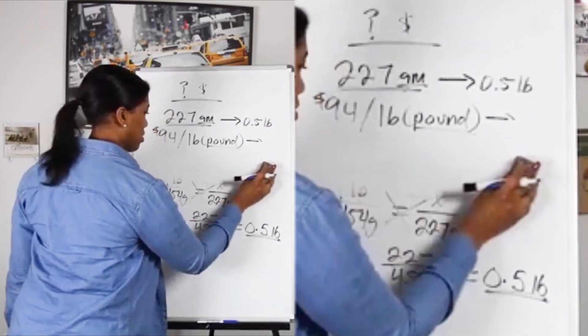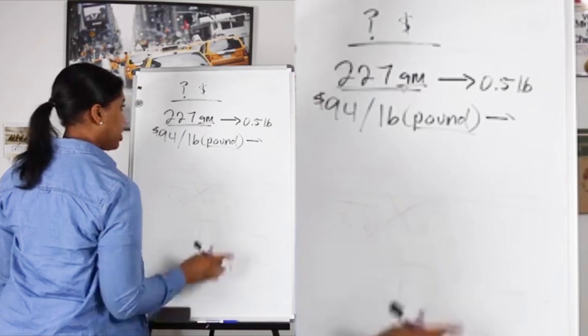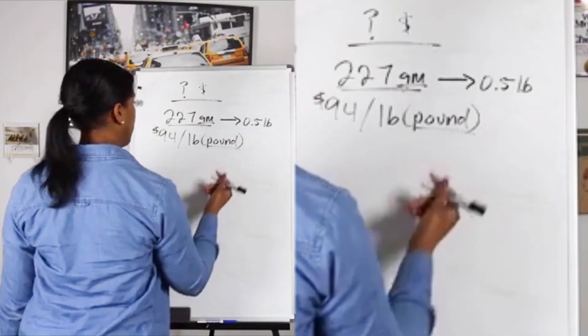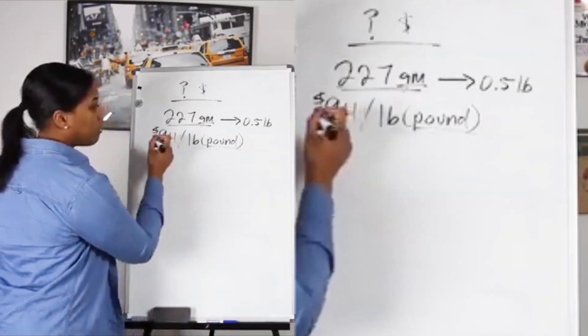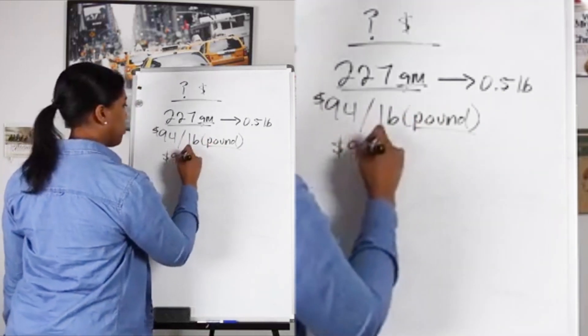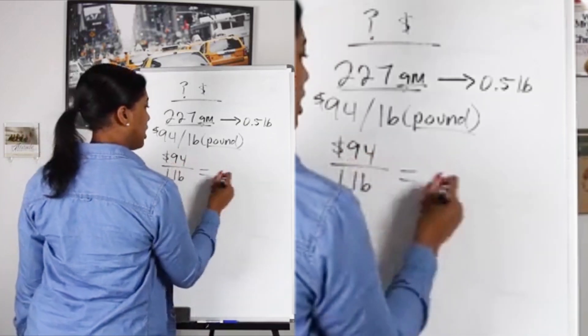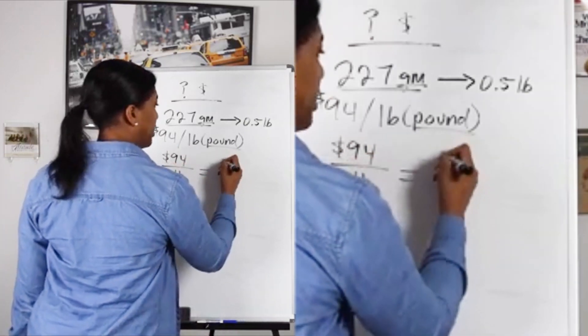Now, if we know that $94 will buy us one pound - so we've got $94 for one pound - then how much money